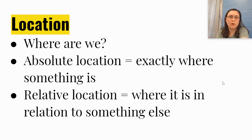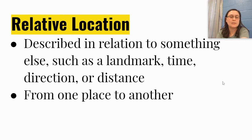Location answered the question, where are we? We used absolute and relative location to describe that. Absolute is exactly where something is based on latitude, longitude, or address. And relative location is where something is in relation to something else. And that can change.